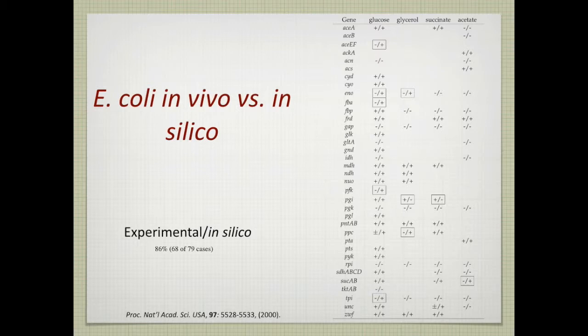So that table over there shows four columns, which is growth on four different substrates, glucose, glycerol, succinate and acetate. And then all the rows in this table show the different genes that were knocked out of E. coli. And if you look at the outcome of the prediction here, so there is experimental slash in silico. So there's a plus and a plus. Cell growth in silico, wild type cell growth. So there's a minus and a minus. You predict no growth and you measure no growth.